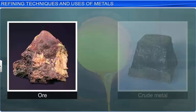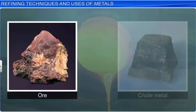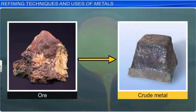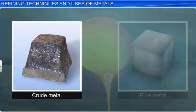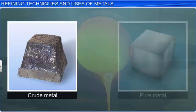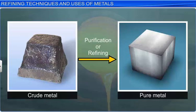A metal extracted from its ore by any method is generally impure and is known as crude metal. The impure metal is purified by subjecting it to a process of purification or refining.